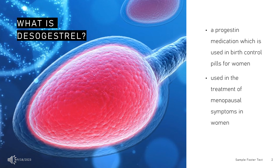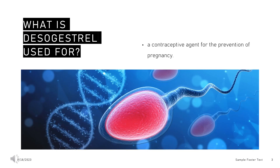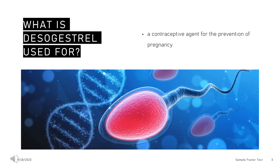In 2020, the version with ethinyl estradiol was the 120th most commonly prescribed medication in the United States, with more than 5 million prescriptions. Oral Desogestrel is used in combination with ethinyl estradiol as a contraceptive agent for the prevention of pregnancy. Desogestrel is part of the combined oral contraceptives that contain a mix of estrogen and progestin which inhibit ovulation.